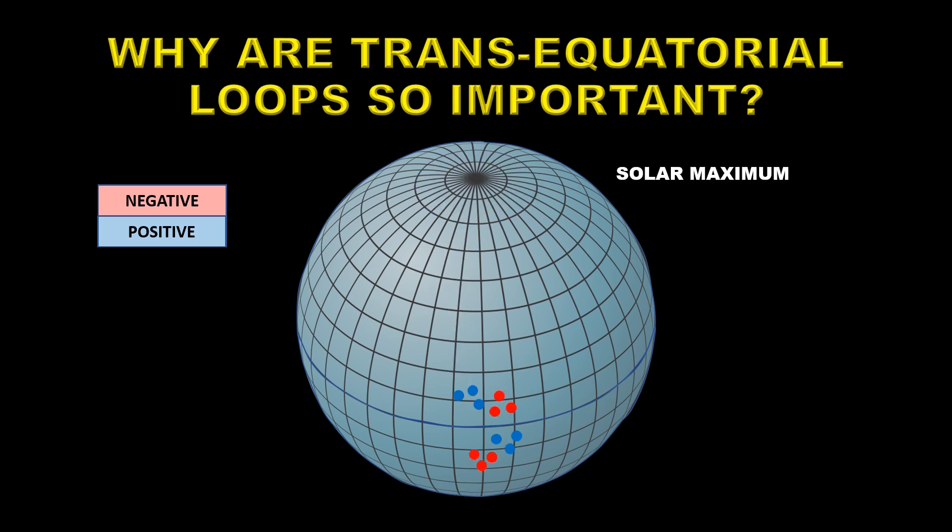So at solar maximum what has happened is so many of these excess trailing region spots have been taken to the pole that the northern polar coronal hole is destroyed and the same for the south. So you have a situation like this now it's still producing sunspots and these same excesses will continue.